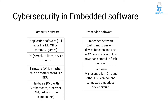On top of firmware, we have an operating system layer, which has the kernel, utilities, and device drivers. And on top of that, we have application software like MS Office, Adobe, PDF reader, games, Teams, Microsoft Outlook, and even Chrome.